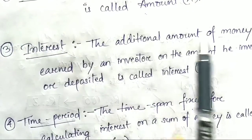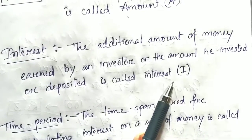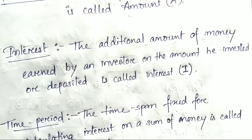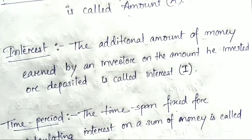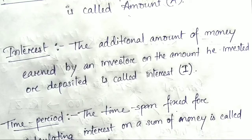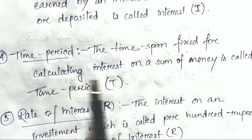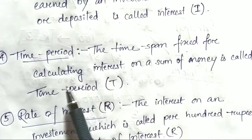Interest: the additional amount of money earned by an investor on the amount he invested or deposited is called interest. If you deposited 10,000 and received an extra 1,200, that additional money of 1,200 is the simple interest. The time spent fixed for calculating interest on a sum of money is called time period.